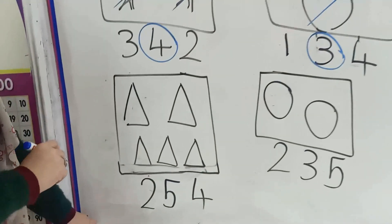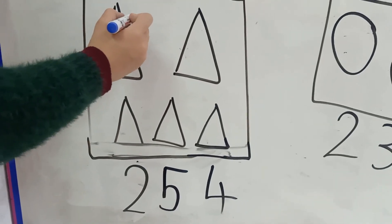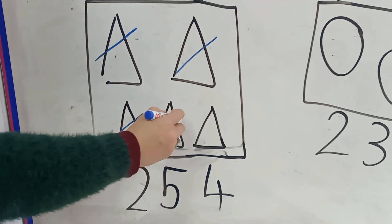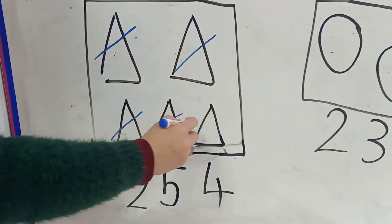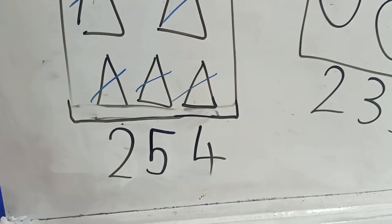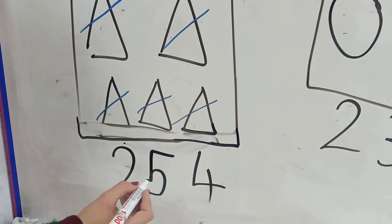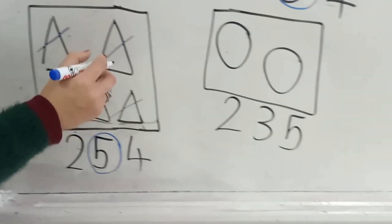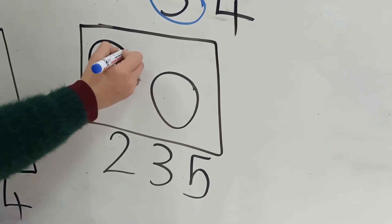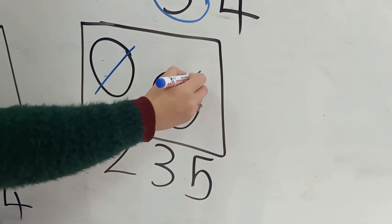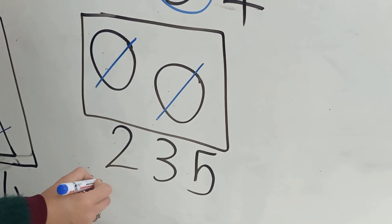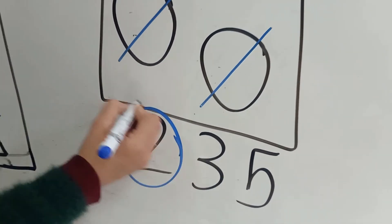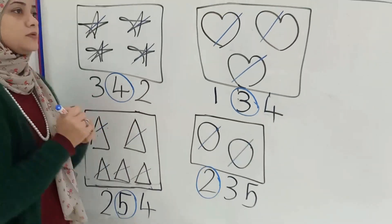How many hearts here, KG1? Let's count together: one, two, three, four, five. Excellent. We will put a circle around number five. How many hearts here, KG1? One, two. We will put a circle around number two. Excellent, KG1.